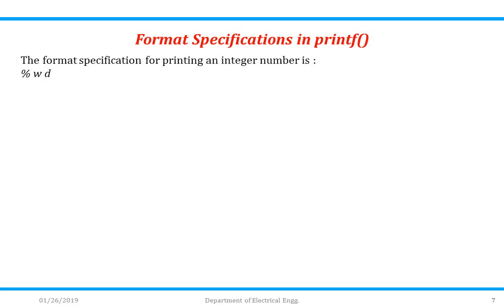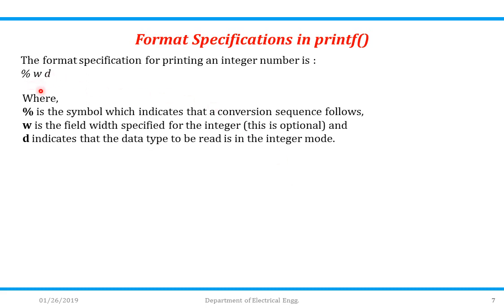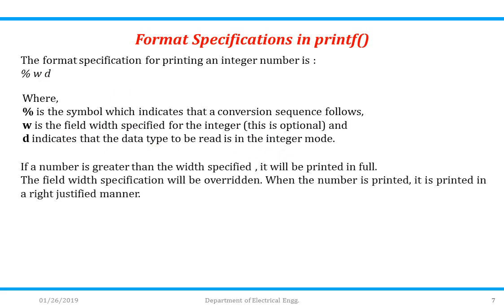You can print numbers using the format specifier %wd, where % indicates a conversion sequence follows, w is the optional field width for an integer, and d indicates the data type is integer. If a number is greater than the specified width, it is printed in full and the field width specification is overridden. Otherwise the number is printed in a right-justified manner.